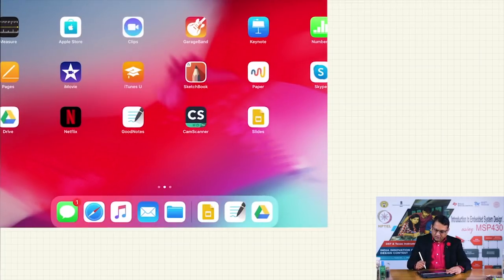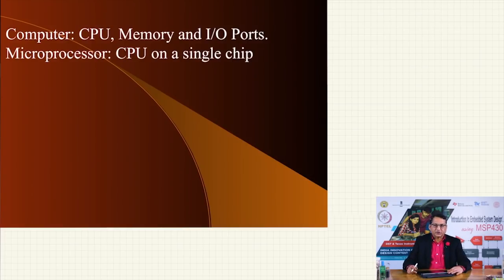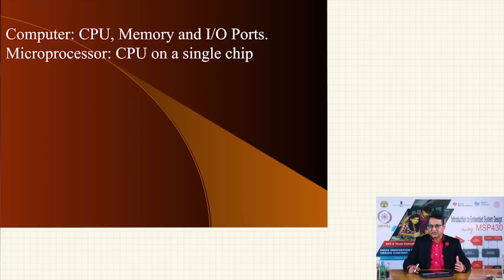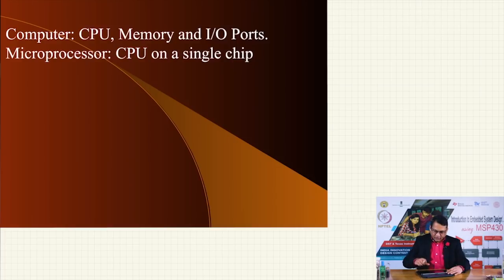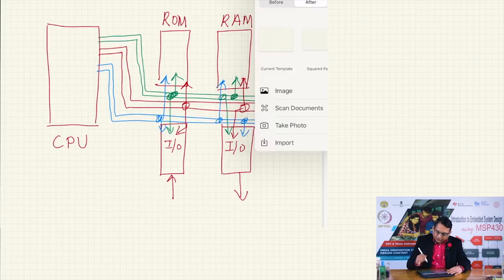The second terminology is 'microprocessor.' A microprocessor is nothing but a CPU on a single chip. In the 1950s and 60s, the CPU was made with discrete components or discrete integrated circuits. In 1971, a startup called Intel integrated the functionality of a CPU onto a single substrate of silicon.